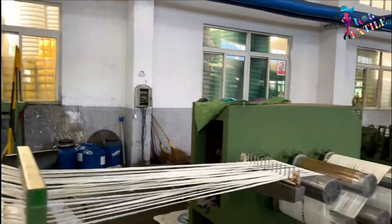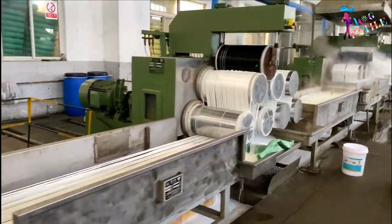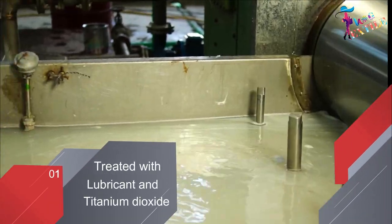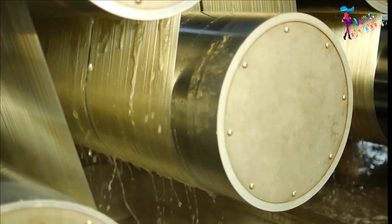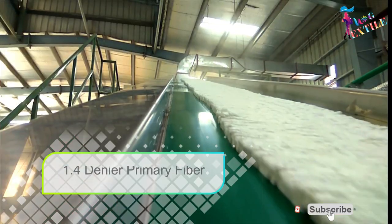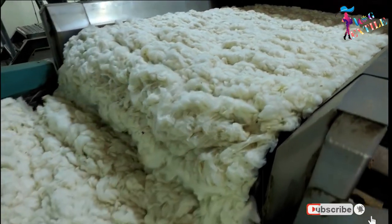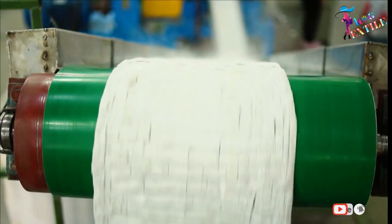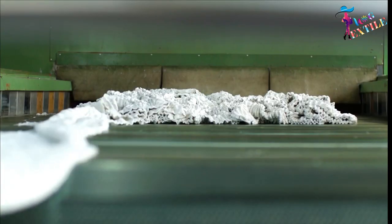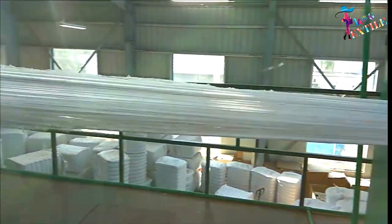Then the slivers are taken to the drawing stage. This is the first stage of the drawing section. Into the rollers of the drawing machine, the slivers are drafted in several steps by using chemicals like lubricant and titanium dioxide. Then we get 1.4 denier primary fibers. This primary fiber automatically runs into the dryer to get moisture-free smooth fiber. The moisture-free primary fiber is then automatically transferred to the cutting machine and cut into desired length as per the requirement of the buyer. After cutting, we get the moisture-free smooth polyester staple fibers.